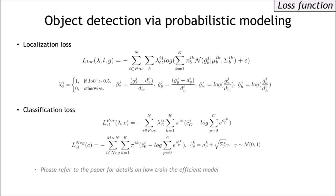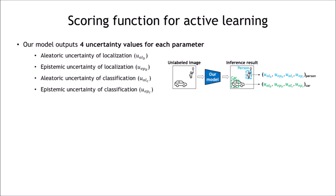These are our proposed loss functions for localization and classification. Please also refer to our paper for more details on this. The proposed object detection network, trained with the proposed loss function, outputs bounding box coordinates, class scores, and two types of uncertainty for each task. In other words, our model outputs four uncertainty values for object detection tasks.